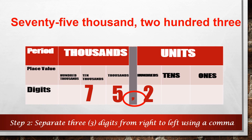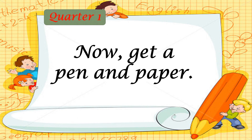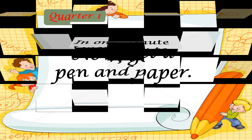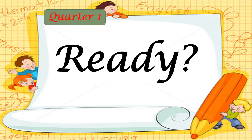So we can write this number in symbol as 75,203, or it can be read as seventy-five thousand, two hundred three. Now, get a pen and paper. In one minute, I want you to answer the exercises on the next slides. Ready? Your timer starts now.